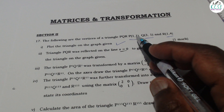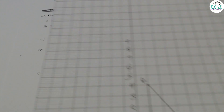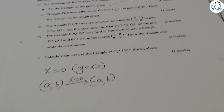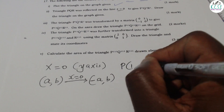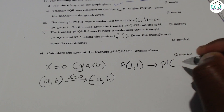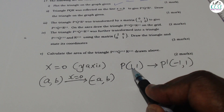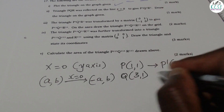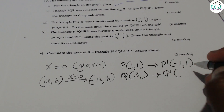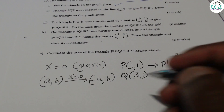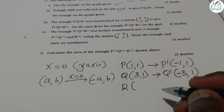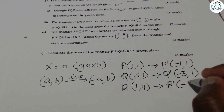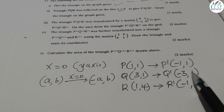A general point (a, b) reflected along the y-axis becomes (-a, b). The x-coordinate changes sign — if positive it becomes negative, if negative it becomes positive — while the y-coordinate remains the same. So P(1,1) becomes P'(-1,1), Q(3,1) becomes Q'(-3,1), and R(1,4) becomes R'(-1,4).